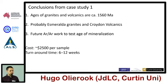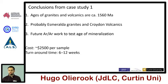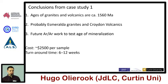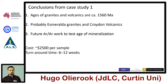So the conclusions from the first case study: we've got granites and volcanics from about the same age, probably related to units just to the east. We're looking at doing future argon-argon work to test the age of this mineralization — whether it also happens at ~1560 Ma or is much younger. Cost for these sorts of things is about $2,500 per sample, maybe slightly more for complex cases. Turnaround time depends mainly on booking the system — if we know samples are coming we can pre-book and get things done quickly, but new projects may take a little longer.